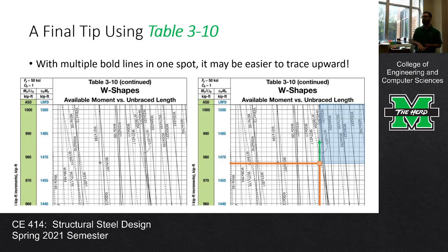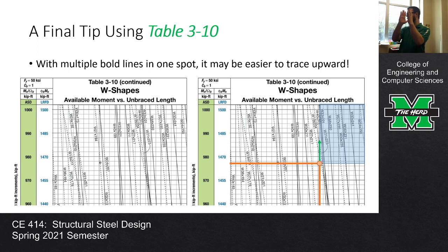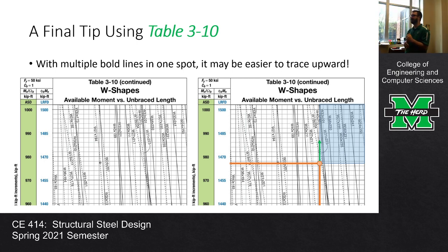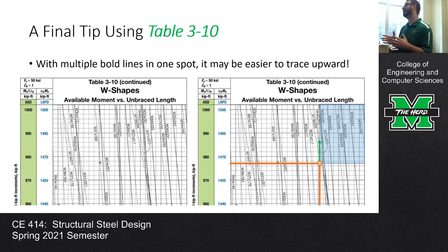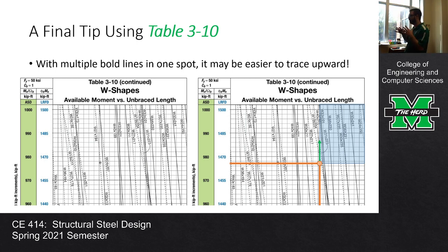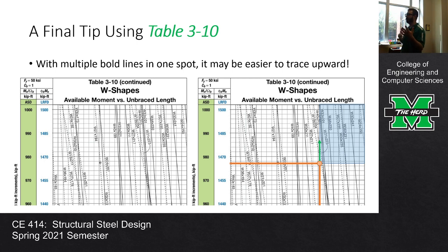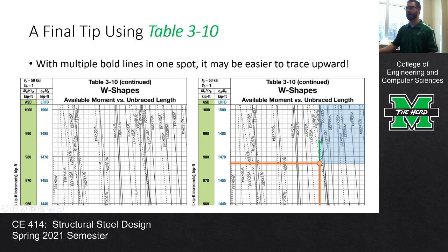One final point: sometimes with Table 3-10 the lines get very vertical, and if there's a lot of stuff overlapping, it's hard to see what the label is for the line you're looking at. Sometimes it's easier to trace upwards to find the section that intersects. You can either trace up and to the right, or trace upwards - either method should work. That's just advice for using the table.